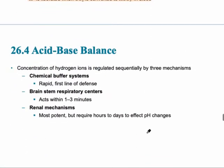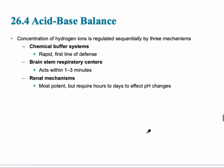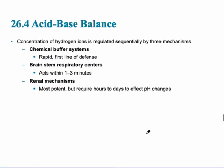Acid-base balance is controlled by three primary mechanisms. The first is in the blood — the chemical buffer systems — which is the rapid first line of defense. The second is with the medulla, the brain stem, where the respiratory centers act within one to three minutes. And finally, the most potent but which takes longer is the renal mechanisms.